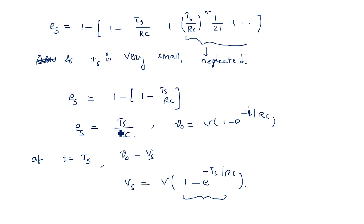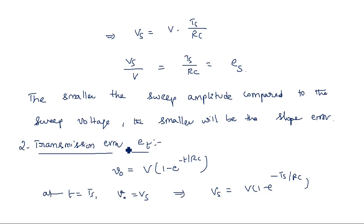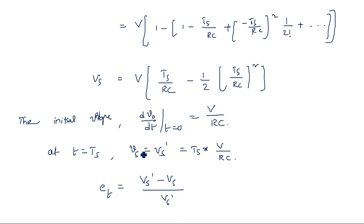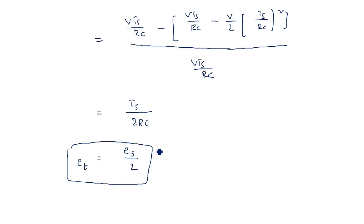The second parameter was transmission error Et, calculated by taking the sweep value at t=Ts — the difference between vs and vs-dash. Et was obtained as Ts/(2RC), and since Es is Ts/RC, we can write Et = Es/2. So in examinations, if asked to derive the relation between sweep error and transmission error, this analysis is required.